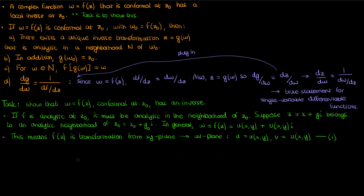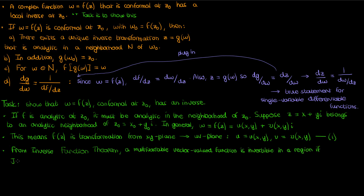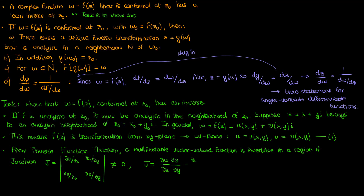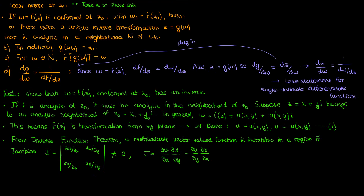According to the inverse function theorem from analysis and calculus, a multivariable vector-valued function is invertible in a region if the determinant j of the Jacobian matrix — the Jacobian — is non-zero in that region. The Jacobian matrix for this two-dimensional function system with u and v consists of various partial derivatives of u and v with respect to x and y. From basic matrix analysis, the determinant of a 2x2 matrix is the product of the main diagonal elements minus the product of the opposite diagonal elements.